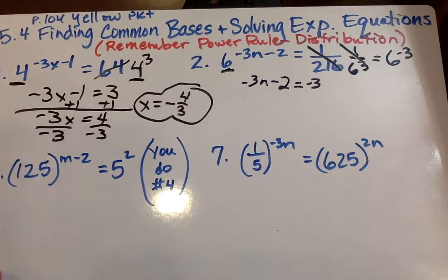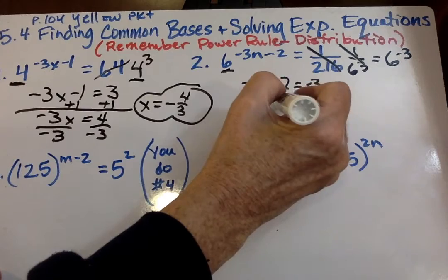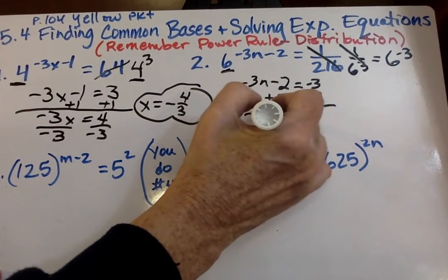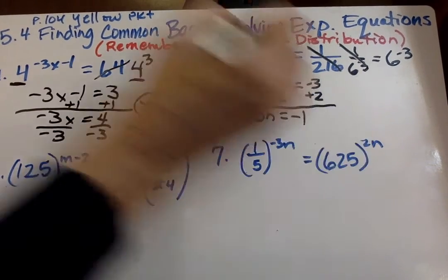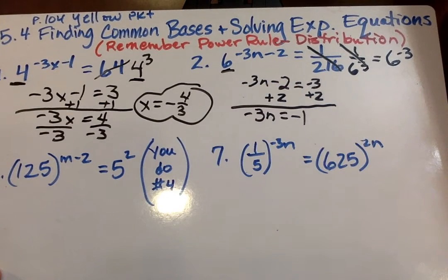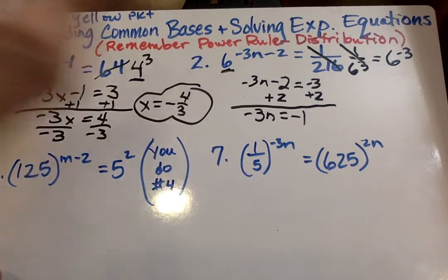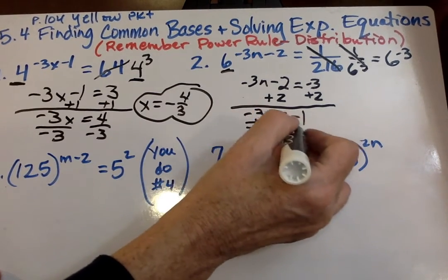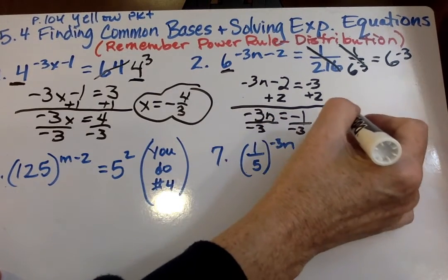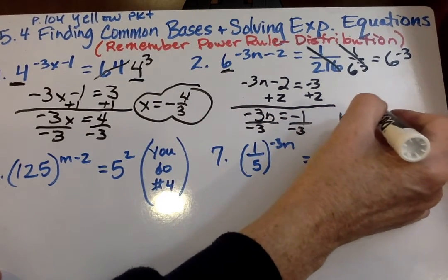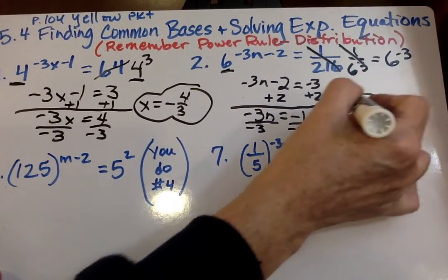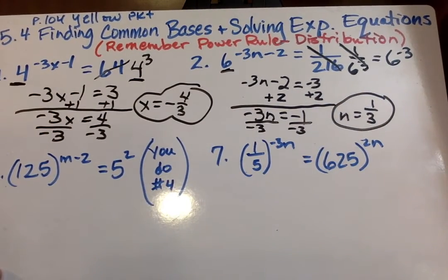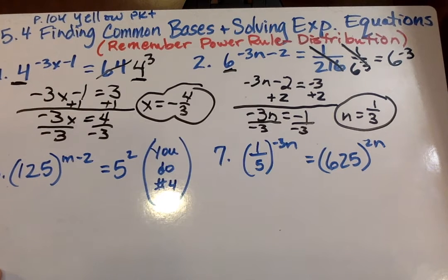I can say negative 3n minus 2 equals negative 3. Next, I'm going to go ahead and add 2 to both sides, and just use my problem-solving skills here. So negative 3n equals negative 1. Then we want to divide by whatever's in front of n, negative 3. So n equals 1 third. And again, I prefer fraction form.